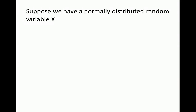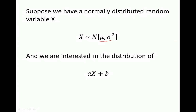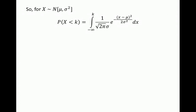So suppose we have a normally distributed random variable x with mean mu and variance sigma squared, and we're interested in the distribution of a linear transformation of x — a times x plus b where a and b are constants, and in this case a and b are negative. For a normally distributed random variable, we know the probability that x is less than k equals the integral from negative infinity to k of f of x dx. For a normally distributed variable, f of x takes on this form — this is the probability density function of x, with mean mu and variance sigma squared.